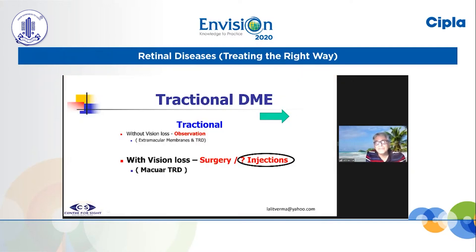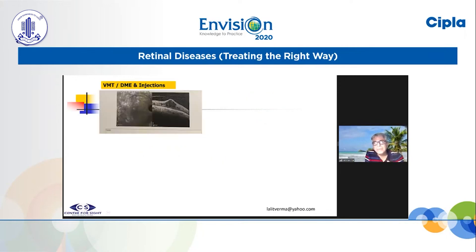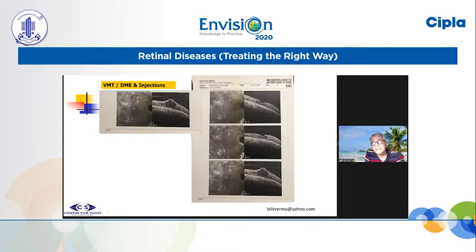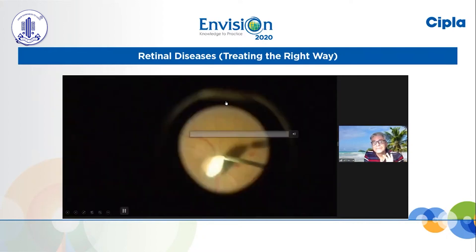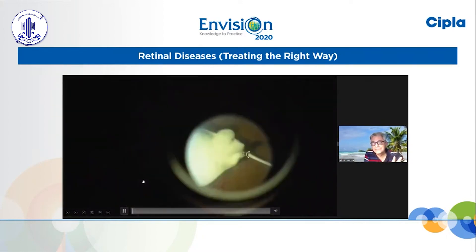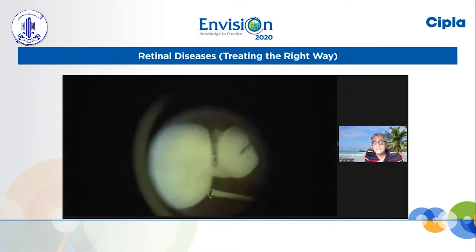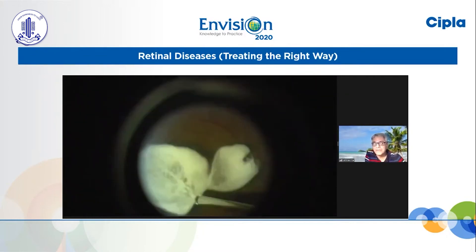Tractional DME with vision loss, especially recent vision loss, is macular TRD. Although there is a sway between surgery and injection, some people may give a trial of injection. In this patient PVD got induced and the DME resolved. However, this may not happen every time. If there is vision loss because of traction, then you do MIVS surgery, which has become relatively simpler.